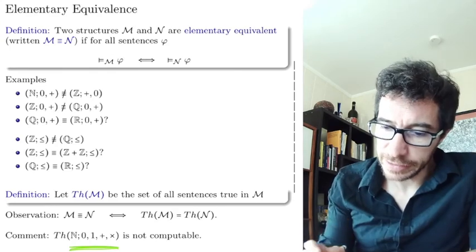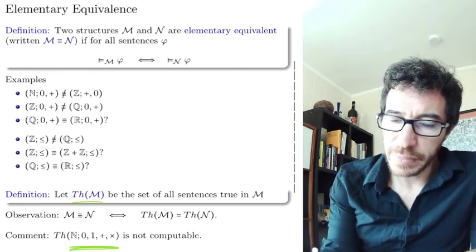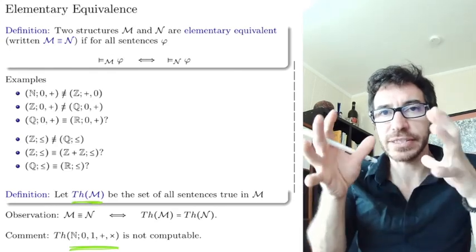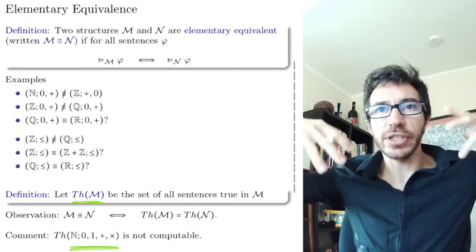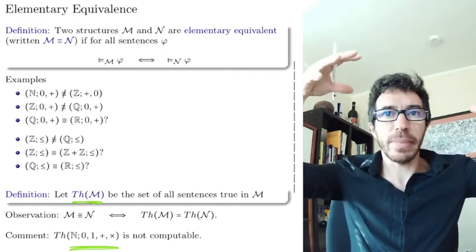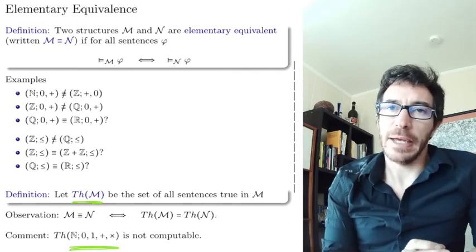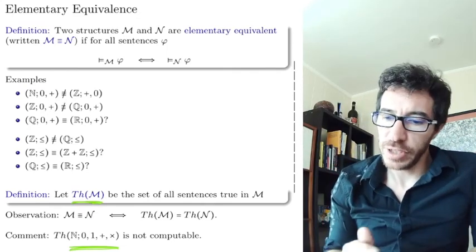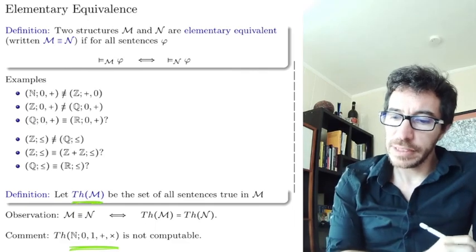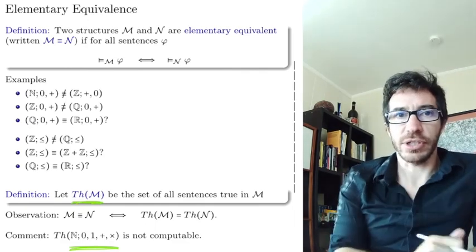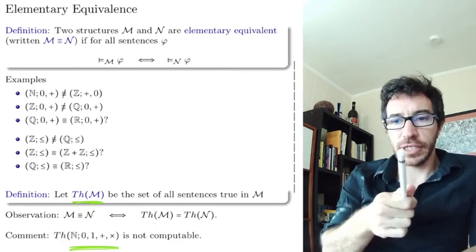Let me highlight again: the theory of M is the theory of a structure. Once you have a structure, you take all the sentences that are true about it. It's an operation on the structure. See you in the next video.